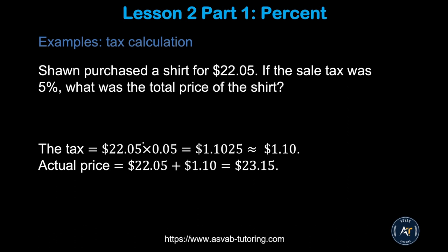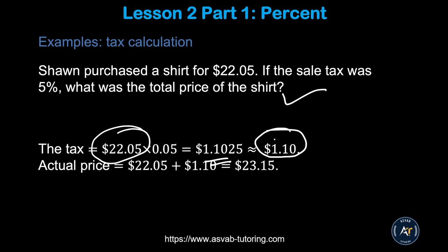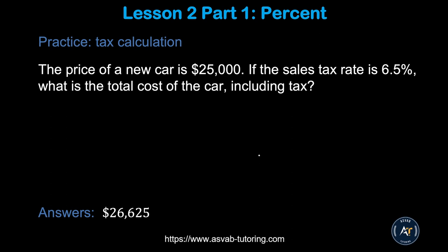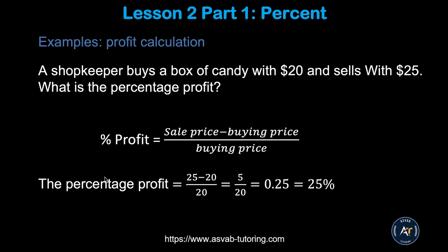Next: tax calculation. Percent means every hundred dollars. Sean purchases a shirt for $22.05. If the sales tax is 5%, what is the total price? Find 5% tax on $22.05: multiply 0.05 × 22.05 to get the tax amount. Round to two decimal places since we're dealing with money. The tax is about $1.10, so the total price is $22.05 + $1.10 = $23.15. There's a practice problem — do the math and you'll get the right answer.